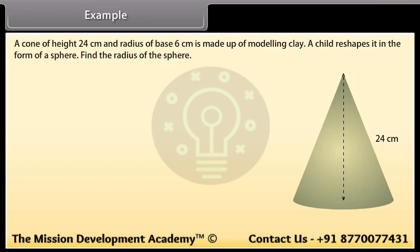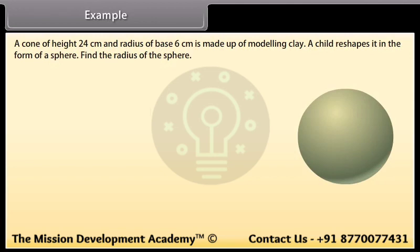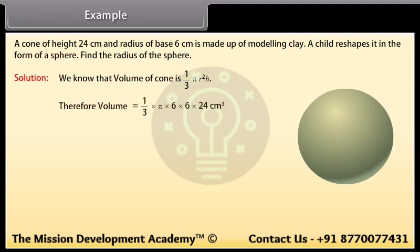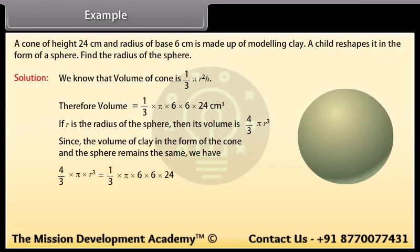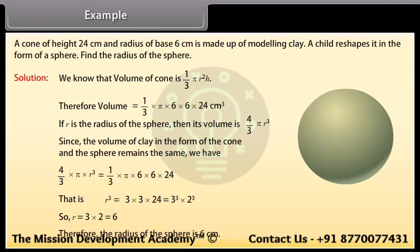A cone of height 24 cm and base radius 6 cm is made of modeling clay. A child reshapes it into a sphere. Find the radius of the sphere. Volume of cone = (1/3)πr²h = (1/3) × π × 6 × 6 × 24. If r is the radius of the sphere, its volume = (4/3)πr³. Since volume is preserved, solving gives r = 3 × 2 = 6. Therefore, the radius of the sphere is 6 cm.